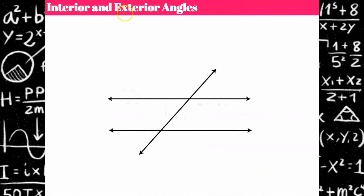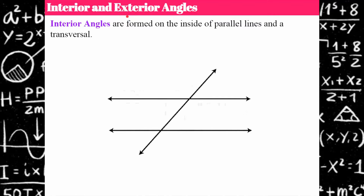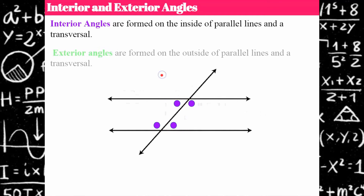Now we're going to talk about interior and exterior angles. To understand the next two vocabulary words, you need to understand what interior angles and exterior angles are. Interior angles are formed on the inside of the parallel lines and the transversal — these four angles are called interior angles. Exterior angles are formed on the outside of the parallel lines. There are two pairs: these are exterior and these are exterior.